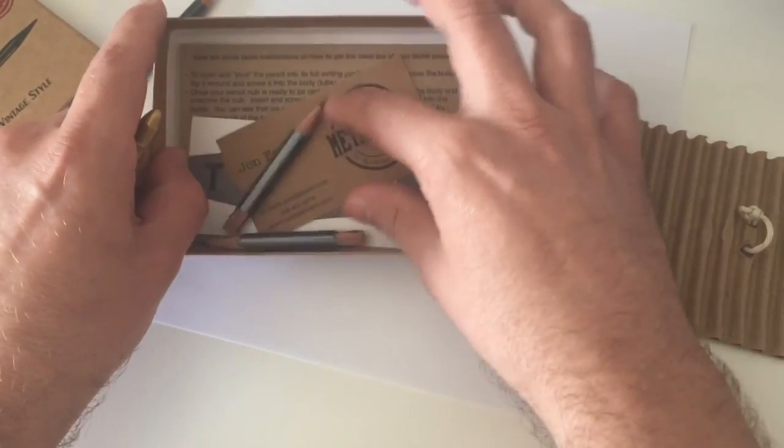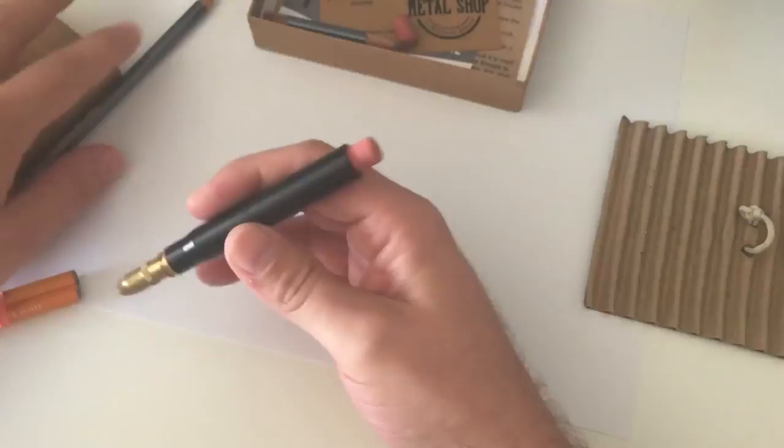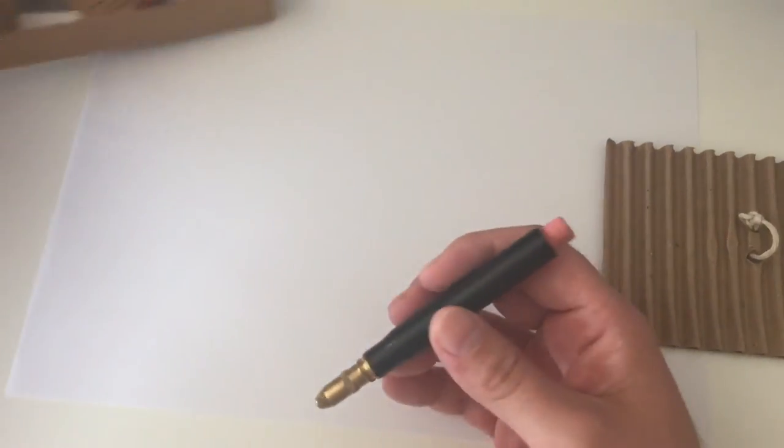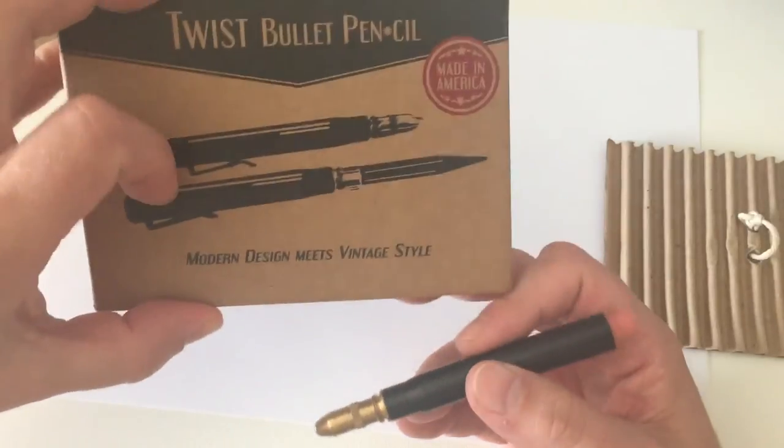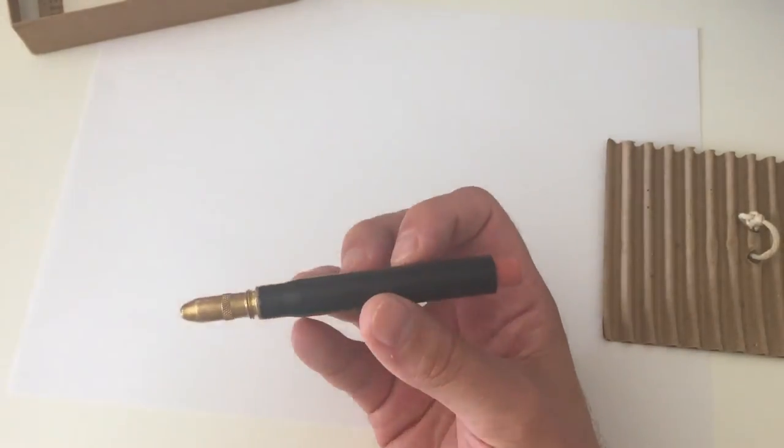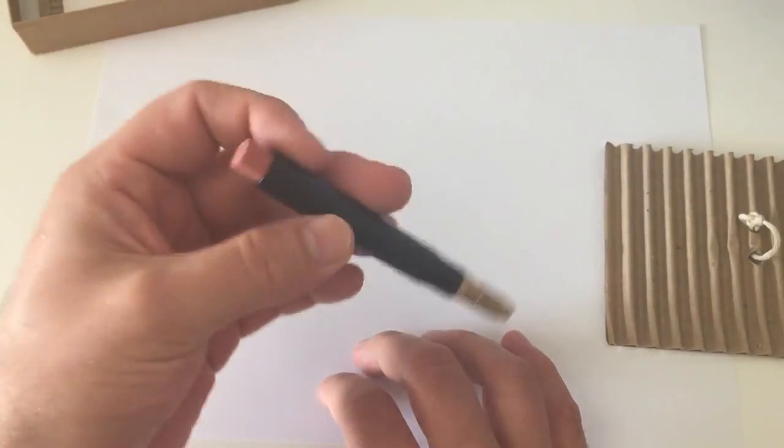The bullet pencil itself is available in various options. Before I start, this is called a Twist Bullet Pencil because, as far as I understand from the website metalshopct.com, I'll link the website where you can get it.